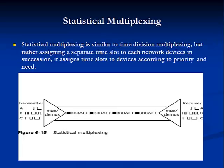Statistical multiplexing is similar to time division multiplexing, but rather than assigning a separate time slot to each network device in succession, it assigns time slots to devices according to priority and needs. This method is more efficient than TDM because it results in fewer empty time slots.